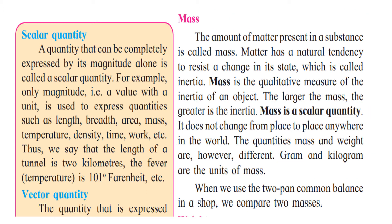Now let us understand each of these quantities in detail. Let us first understand mass. The amount of matter present in a substance is called mass. Matter has a natural tendency to resist a change in its state, which is called inertia. So inertia means it stays in a particular state unless something moves it. Matter will not change; it will remain as it is until a greater force acts on it.